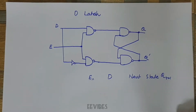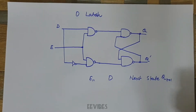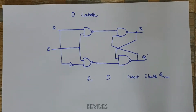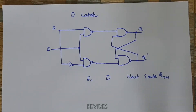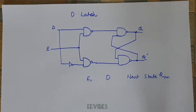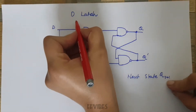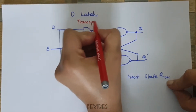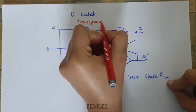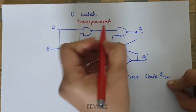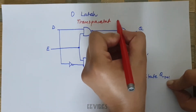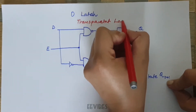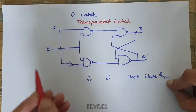Let's study the working operation of the D latch, which is also called the data latch or the transparent latch. It's called the transparent or data latch because whatever the value of the input D is, it is transferred at the output side.